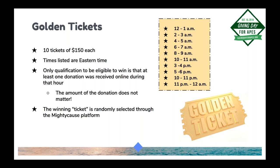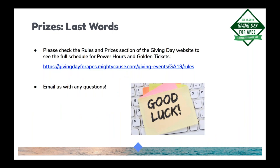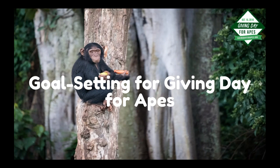Finally, we have golden tickets — there are 10 of them, each worth $150, during the hours listed on the slide. All times are Eastern. The only qualification is that your organization has received at least one donation online during the hour; the amount doesn't matter — a single five-dollar donation could win you the golden ticket. The winning ticket is randomly selected through the MightyCause platform and announced shortly after the hour ends. Full prize eligibility details and the schedule are on the Giving Day website under rules and prizes.